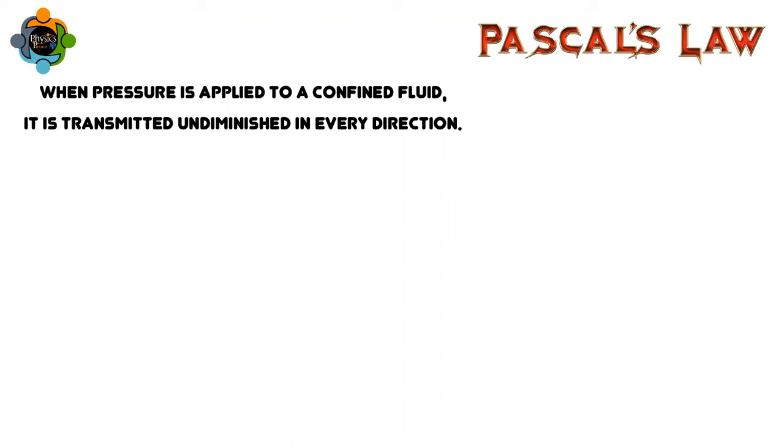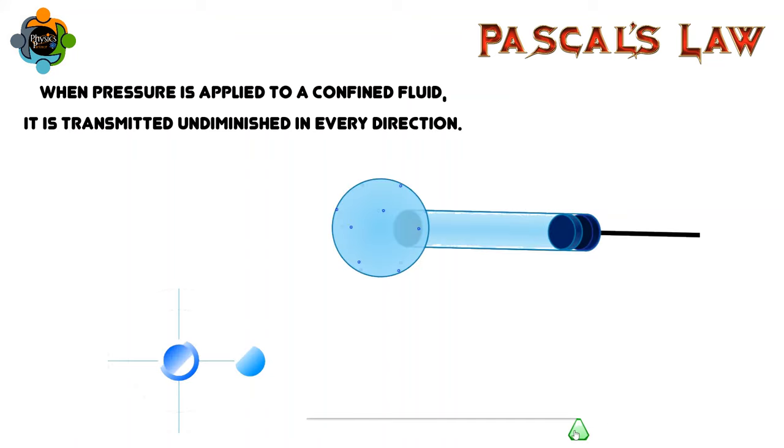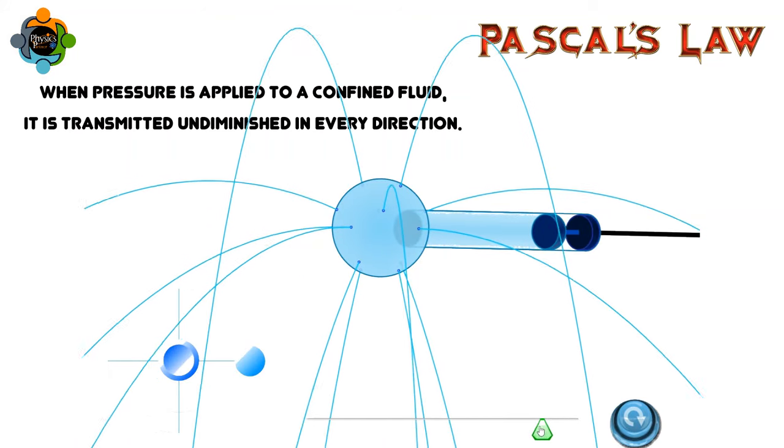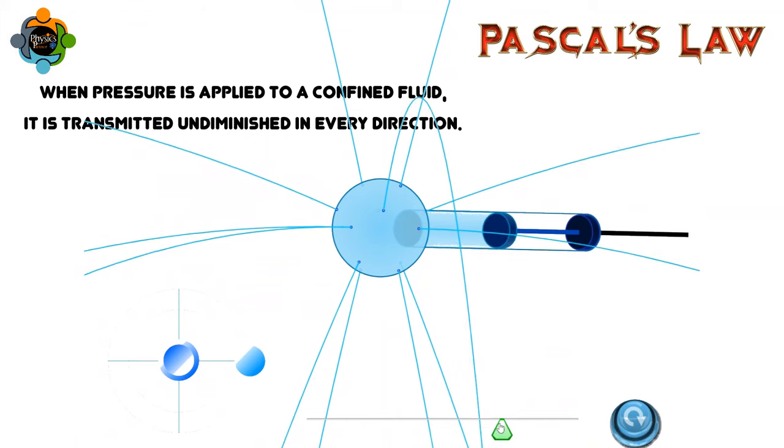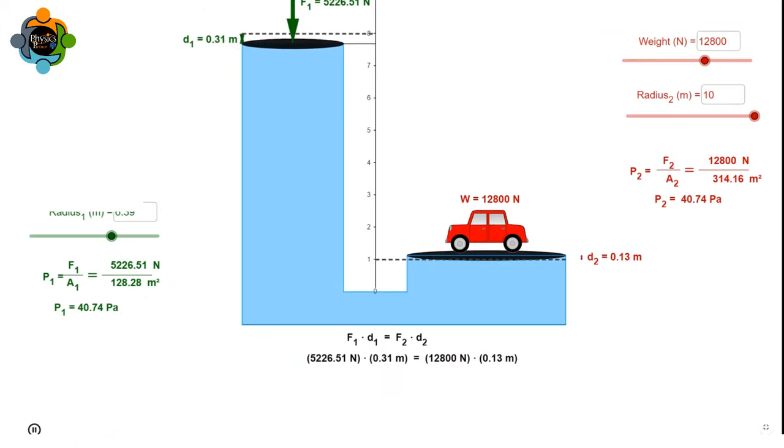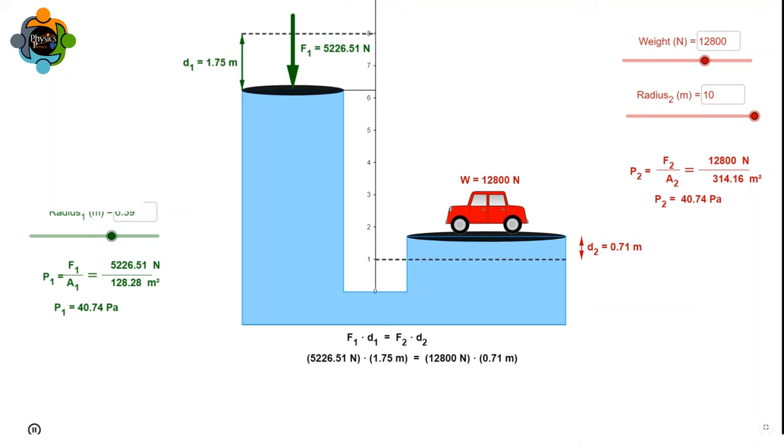The principle that makes hydraulic systems work is Pascal's law, which states that when pressure is applied to a confined fluid, it is transmitted undiminished in every direction. In the case of a car lifter, when the hydraulic pump applies pressure to the fluid in the cylinders,